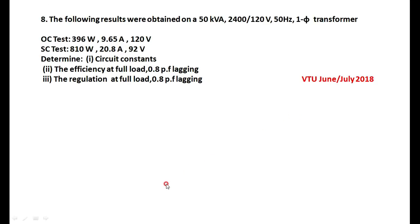Next numerical from BTU June/July 2018 paper. OC test data: 396 watts, 9.65 amperes, 120 volts. SC test data: 810 watts, 20.8 amperes, 92 volts. Rating of the transformer: 50 kVA, 2400/120 volts. Determine the circuit constants, the efficiency at full load 0.800 pf lagging, and the regulation at full load 0.800 pf lagging.